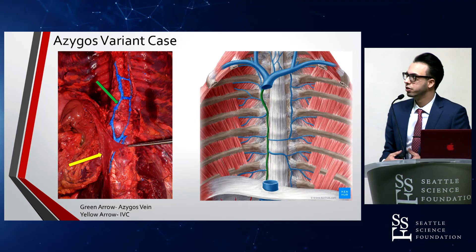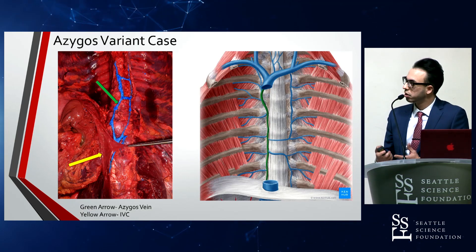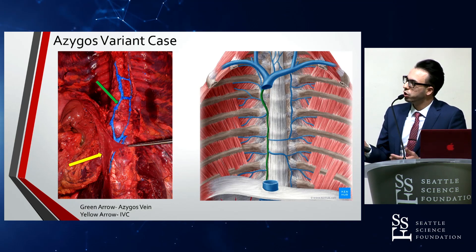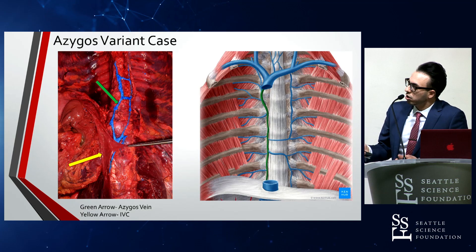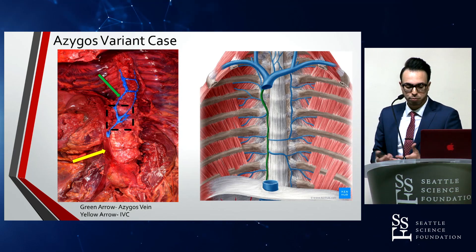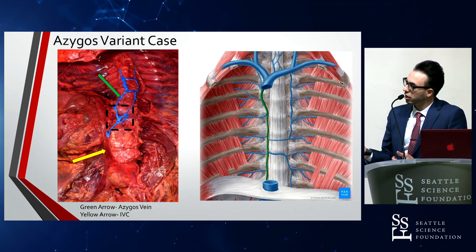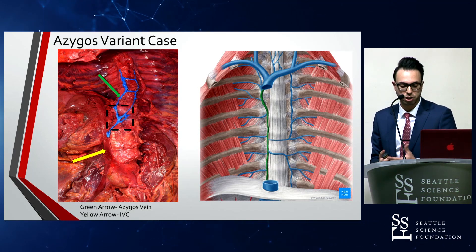Returning to the azygous vein variant case: during routine cadaveric dissection, Dr. Iwanaga came across a case like this. The image shows the normal anatomy of the azygous vein located laterally, whereas in this case it is more located on the midline, which is uncommon, and has more of an H-shaped curve. Notably, this case shows a connection between the azygous vein and the hemi-azygous vein connecting directly to the IVC — something not normally seen. The azygous vein is formed from the union of the ascending lumbar veins and the right subcostal vein, and normally never drains into the IVC. This connection is thought to arise from failure of the intersubcardinal anastomosis and its regression.